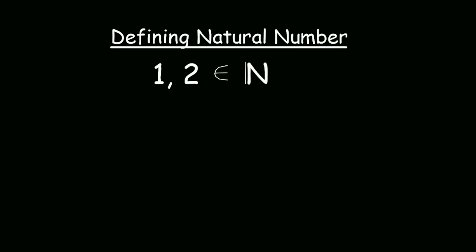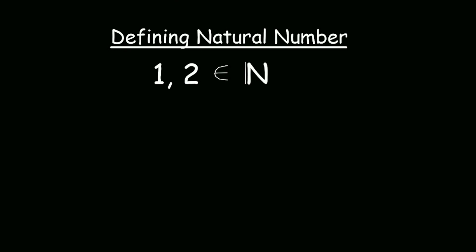So the first axiom that we have right over here is 0 is a natural number. So we are starting with first adding one element in the set of natural numbers. Now, before stating the second axiom, we have to define the successor function. What is the successor function? Well, the successor function is the function that sends a natural number to the next one. That means if we have an integer n, the successor function S(n) equals n plus 1. So we have S(0) equals 1, S(1) equals 2, and so on.